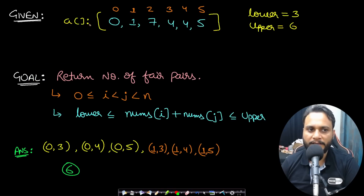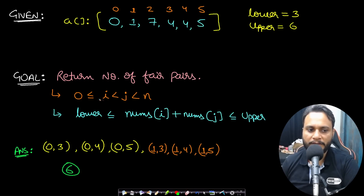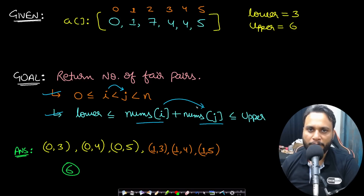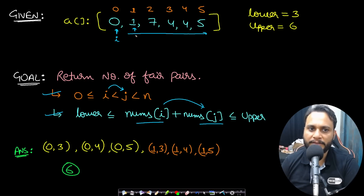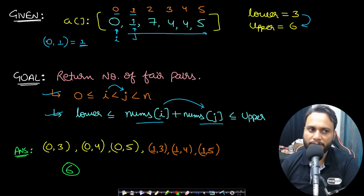Let's look at an example for better understanding. Our given array is [0, 1, 7, 4, 4, 5] and our lower and upper values are 3 and 6. The goal is to find pairs where i and j are within bounds, i is not equal to j, and the sum at indices i and j is within the range of lower and upper. If we fix i at index 0, we iterate j to the right. For j at index 1, the pair is (0,1) and the sum 0+1=1 is not in range [3,6], so it's invalid.